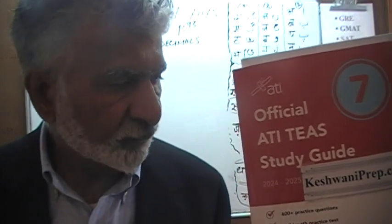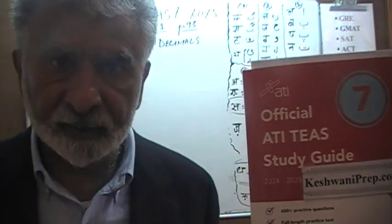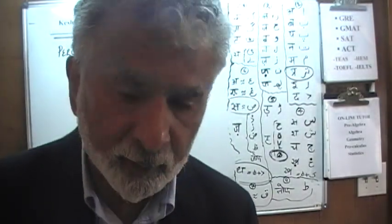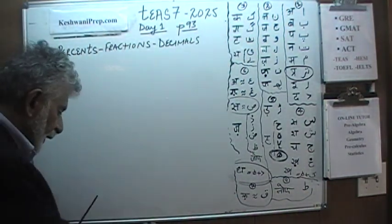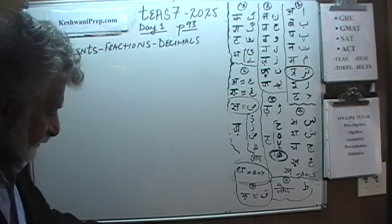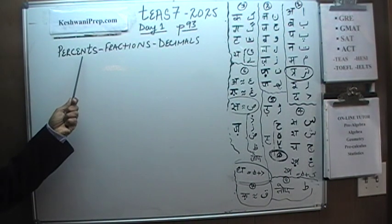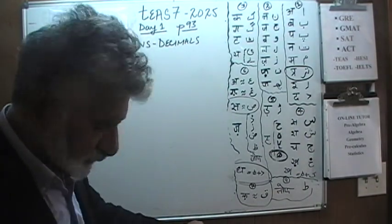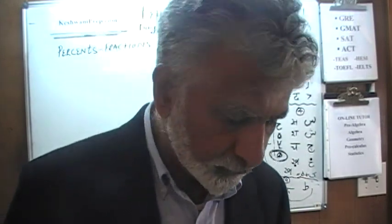We will solve all the math problems that you will find in this book — the ATI study guide version 7, 2025. That's the latest one. If you do not own this book already, purchase one immediately. Always make sure this book is in front of you when we're working together. We're going to work through page by page. The story begins on page number 93, where the first topics are percentages, fractions, and decimals. We have 10 problems, and our job is to convert from percentage to fractions to decimals and back and forth.